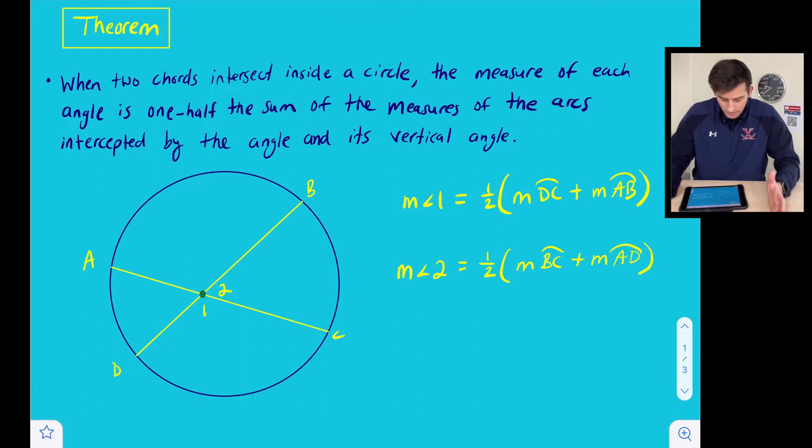So if we look at this diagram below, we have chord AC and chord BD, and we're looking at angles one and two. So for angle one, we're going to take one half the measure of angle one's intercepted arc, which is arc DC, and also the intercepted arc of its vertical angle.